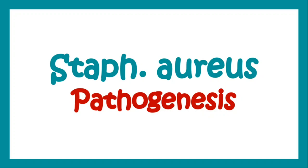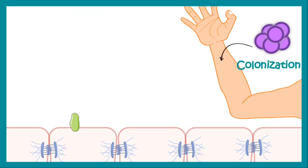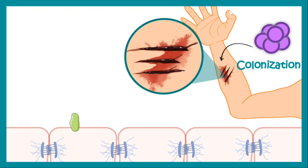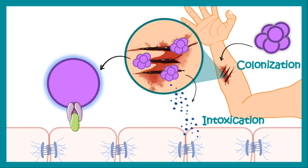Let us come to the pathogenesis of Staphylococcus aureus. Generally, Staphylococci colonize the skin of humans. In the skin, if they can get a breach like a laceration or abrasion, they enter through that breach and invade. After this invasion, they can either produce toxins which can cause disease, known as intoxication, or they can directly infect the organism, which is known as infection. That means colonization is followed by intoxication or infection.